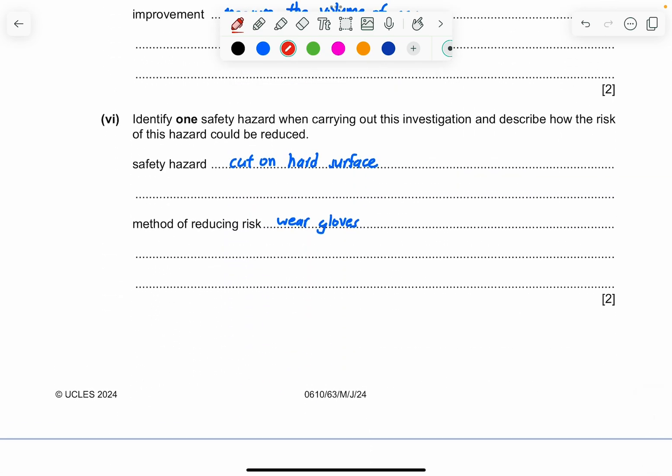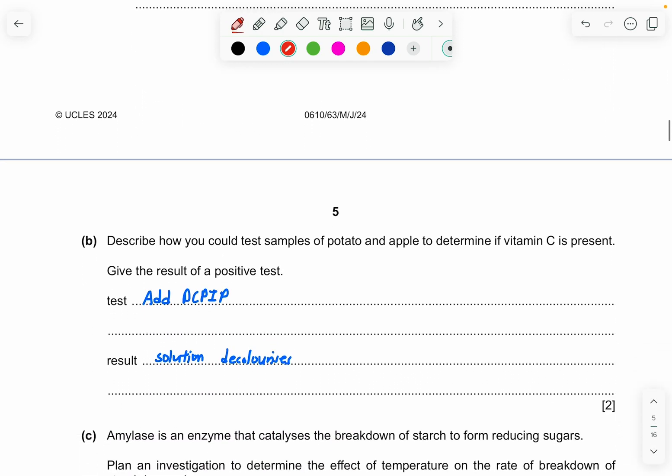And part six, identify one safety hazard when carrying out this investigation, and describe how the risk of this hazard could be reduced. So safety hazard is that you cut on the hard surface, and method of reducing risk is by wearing gloves. So this is the correct answer.